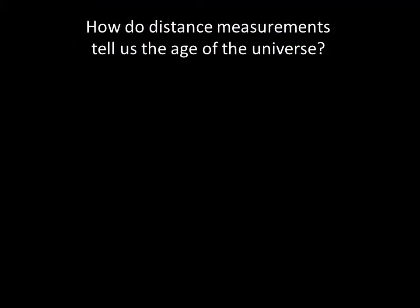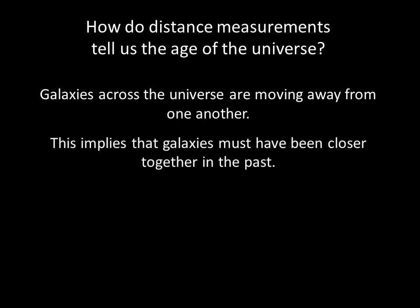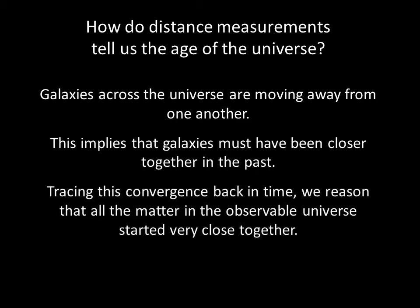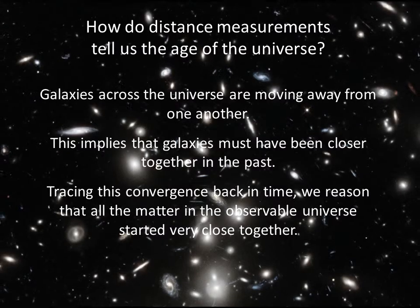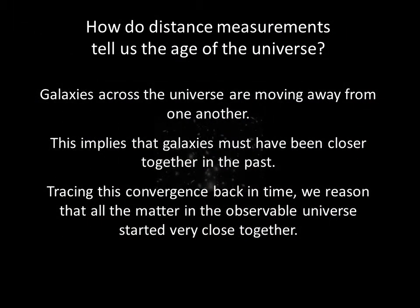We observe that galaxies across the universe are moving away from one another. This implies that galaxies must have been closer together in the past. Tracing this convergence back in time, we reason that all matter in the observable universe started very close together. The entire universe came into being at a single moment.